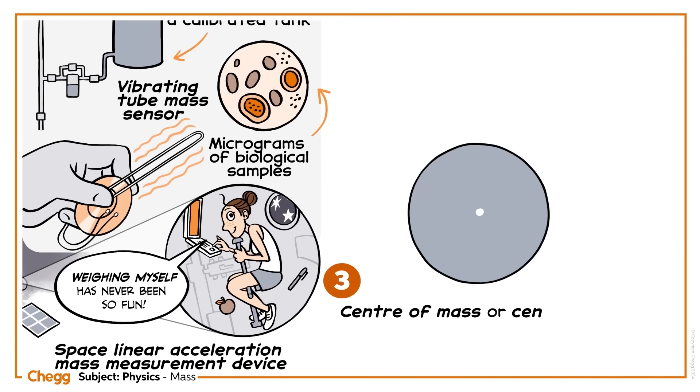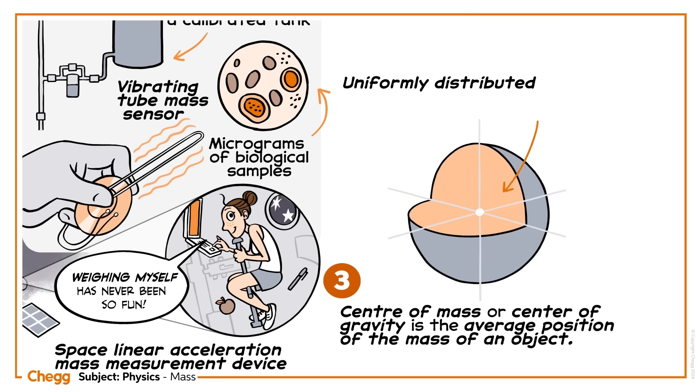Centre of mass or centre of gravity is the average position of the mass of an object. Mass can be uniformly distributed, like in a sphere, and in that case the total mass can be assumed to be concentrated at its geometric centre, bang in the middle.